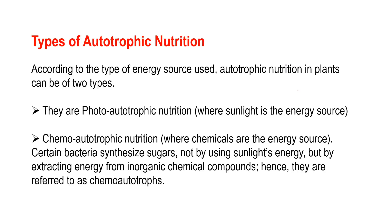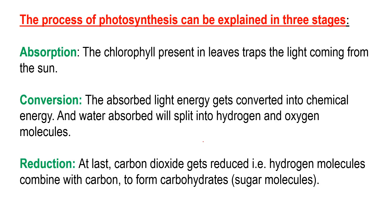There are two types of autotrophic nutrition. The first is photo-autotrophic nutrition, where sunlight is the energy source. The second is chemo-autotrophic nutrition, where chemicals are the energy source. Certain bacteria synthesize food — or sugar — not by using sunlight energy, but by extracting energy from chemical compounds, and that is why they are referred to as chemo-autotrophs.